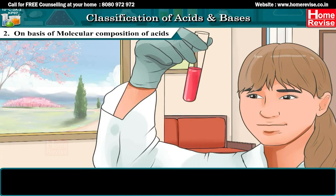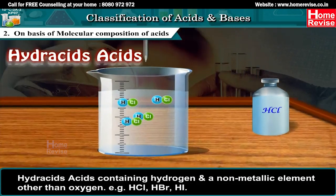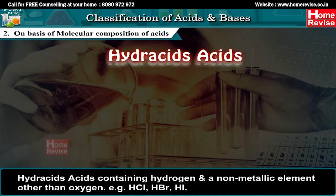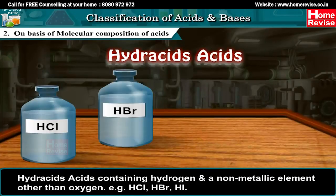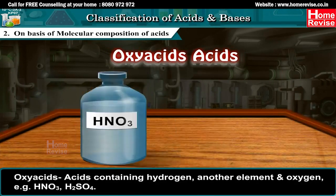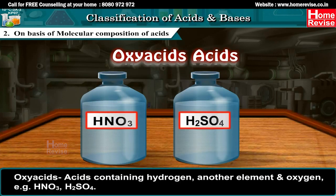2. On the basis of molecular composition of acids: Hydroacids — acids containing hydrogen and a non-metallic element other than oxygen, e.g., HCl, HBr, HI. Oxy acids — acids containing hydrogen, another element, and oxygen, e.g., HNO3, H2SO4.